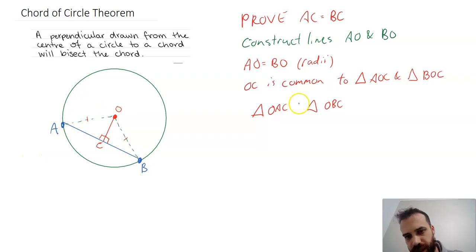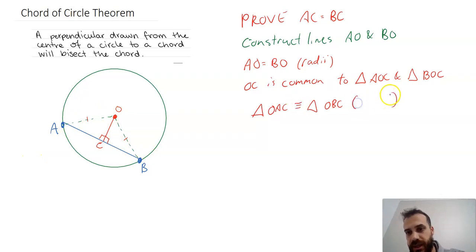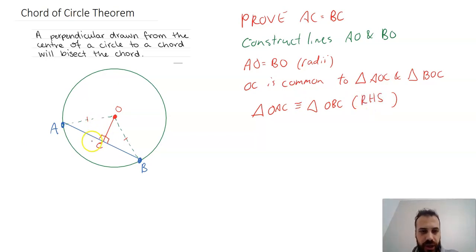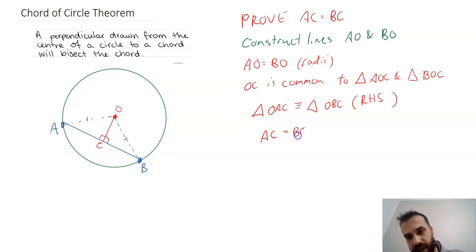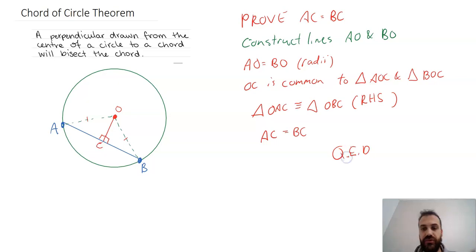Congruence is shown with three lines here. The reason for congruence is RHS — a right-angle triangle, a hypotenuse, and a side. If those two triangles are congruent, therefore AC must be equal to BC. Quod erat demonstrandum.